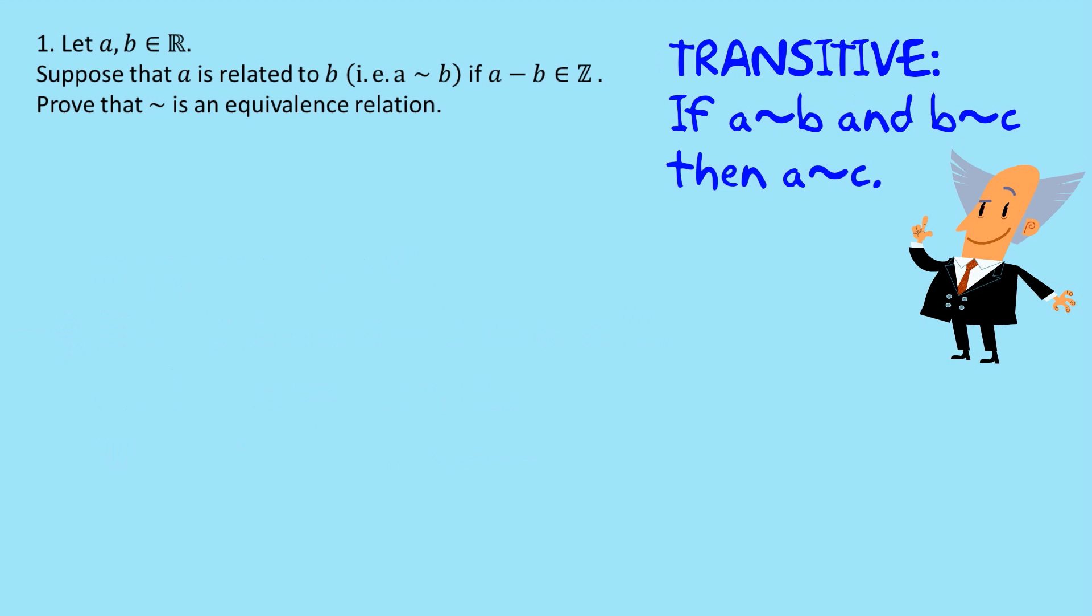Finally, we need to show that if a is related to b and b is related to c, then a is related to c. And you probably would have seen this in high school as transitivity. So let's do the proof of that.